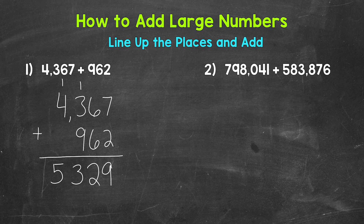Technically we did 1,000 plus 4,000 because we are in the thousands place. We can place the comma in our answer, and we end up with 5,329.